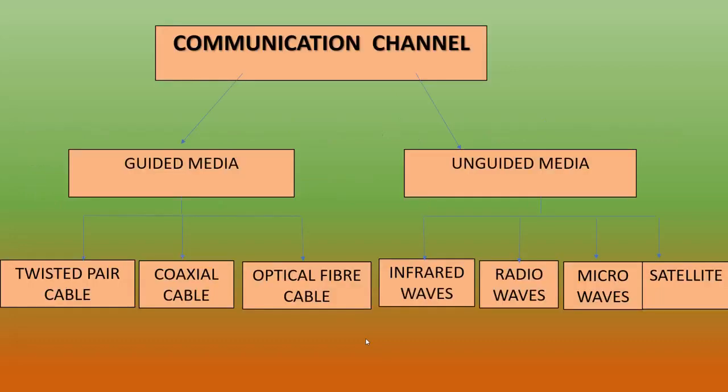Communication channel is divided into two categories: guided media and unguided media. Guided media is subdivided into twisted pair cable, coaxial cable, and optical fiber cable. Unguided media includes infrared waves, radio waves, microwaves, satellites, and WiFi — all these are types of unguided media.